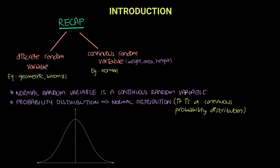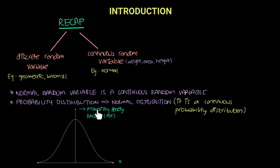Let's label the axes. The x-axis represents the normal random variable, denoted as capital X. The y-axis represents the probability density function, or PDF, which we already learned about in the first chapter. Another thing to note is that this graph goes from minus infinity up to plus infinity.